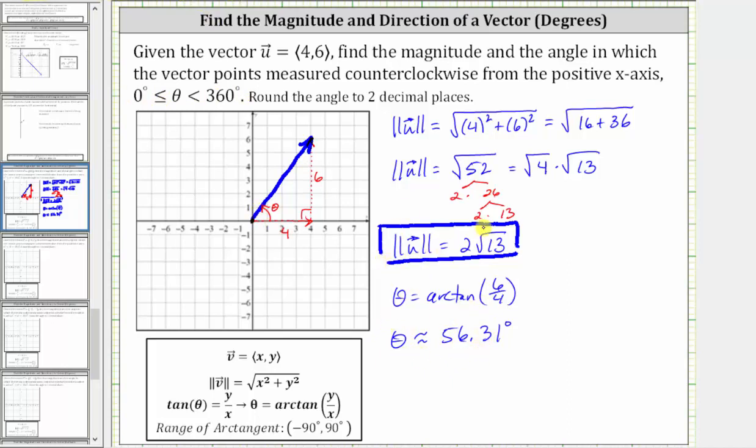So vector u has a magnitude of 2√13 and a direction of approximately 56.31 degrees. I hope you found this helpful.